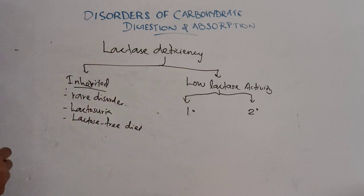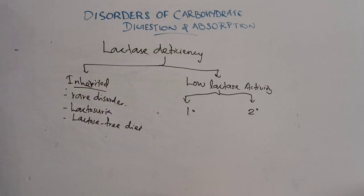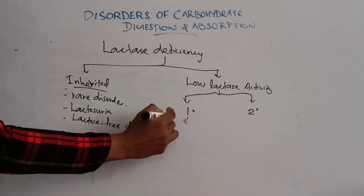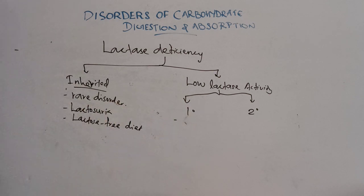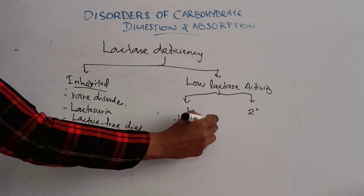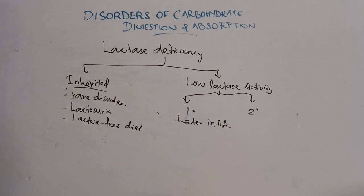Next one is low lactase activity, which is of two types: primary and secondary. Coming to primary low lactase activity: here, intolerance to lactose is not a feature in early life; it appears later in life.